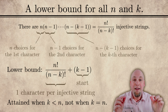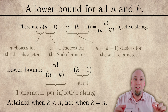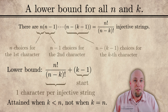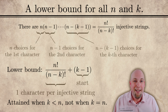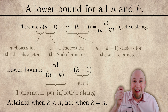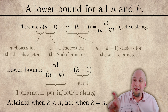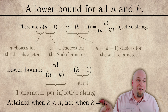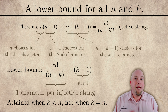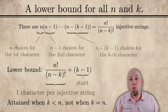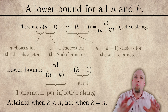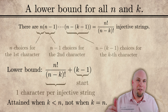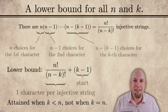The really nice thing that happens — what makes this problem so much easier than the super permutation problem — is that this lower bound is actually always attained, no matter what n is and no matter what k is, with one single exception. The only time it's not attained is when k equals n, which is exactly the original super permutation problem. Injective superstrings are just super permutations in this case, and unfortunately that's the only time when this lower bound is not attained.